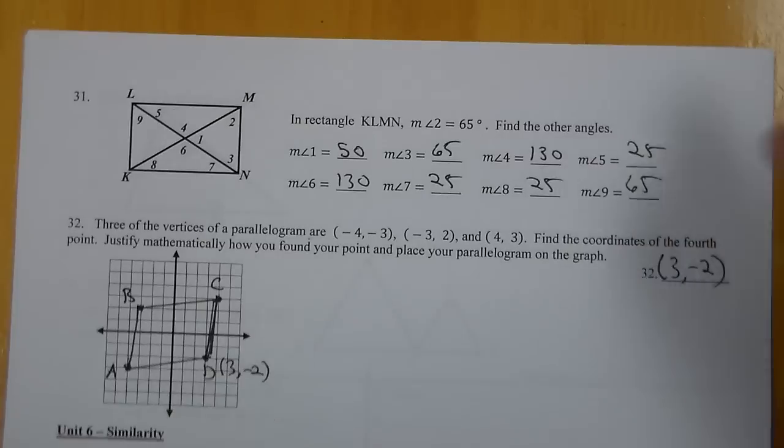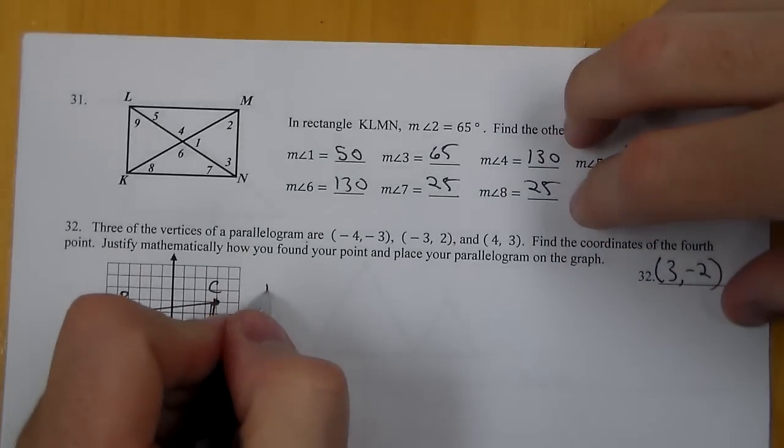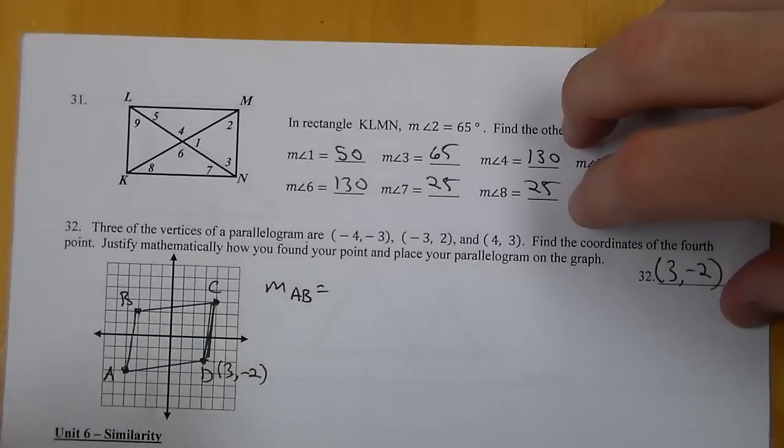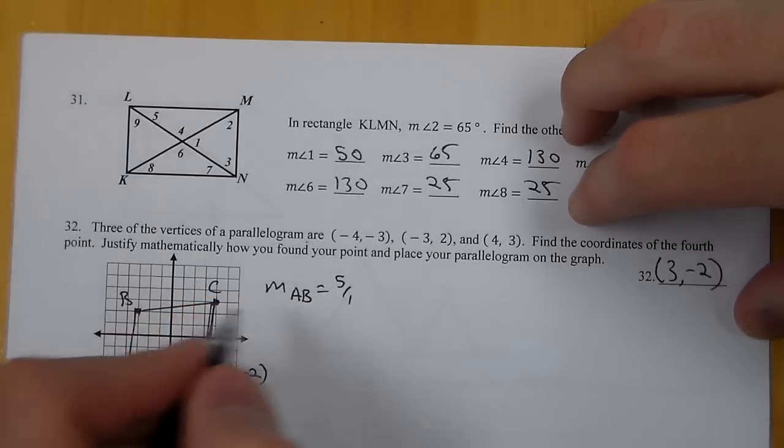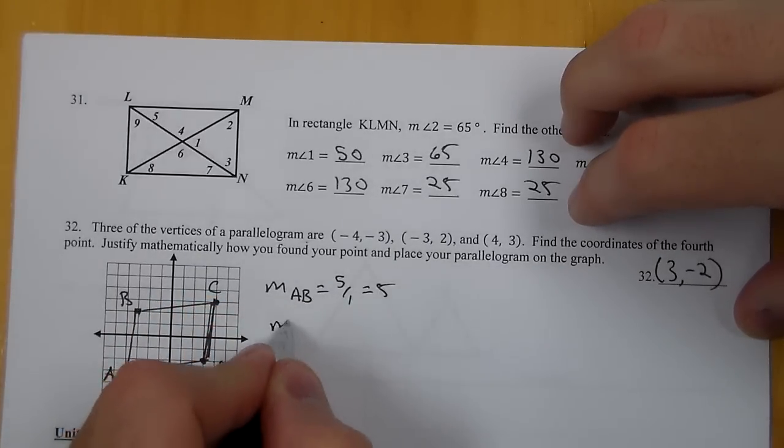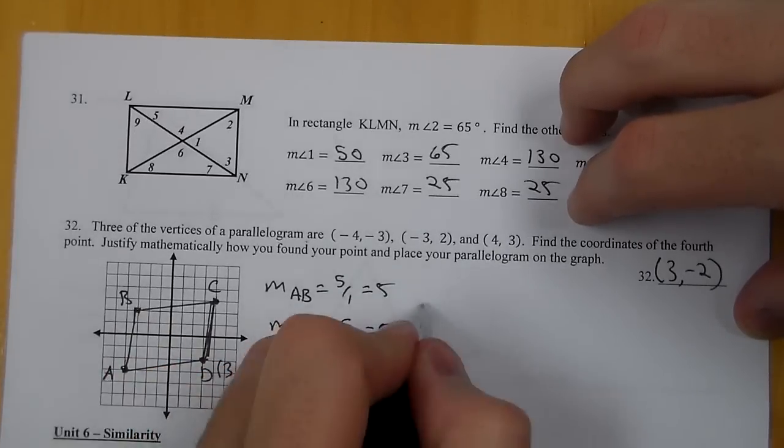And if I need to verify it, I can look at the slopes to show the opposite sides are parallel. I could do distance formula to show the opposite sides are congruent. I could also use midpoint formula to show the diagonals bisect each other. Slope is pretty quick, I would probably look there first. From A to B, I went up five over one, so that's a slope of five.